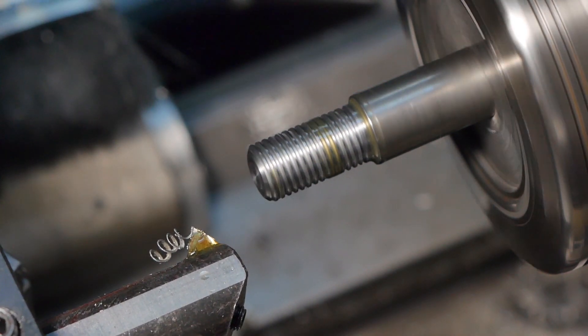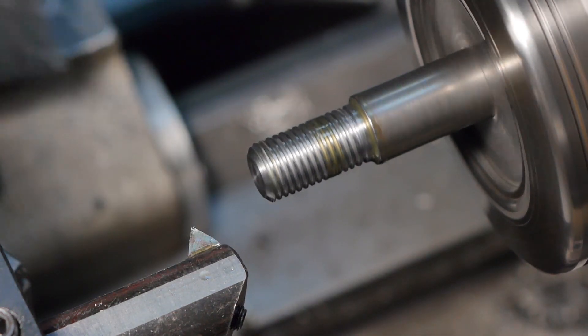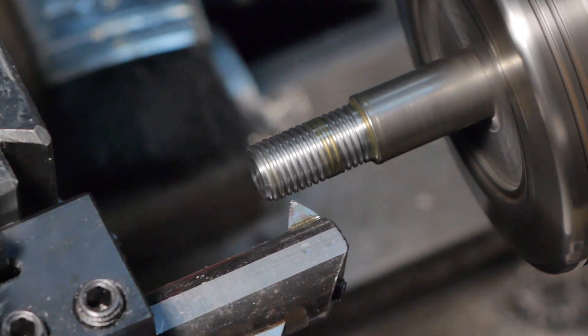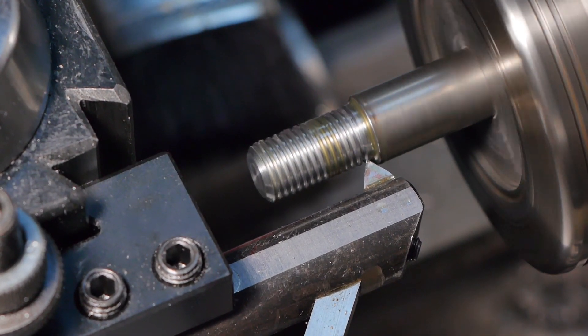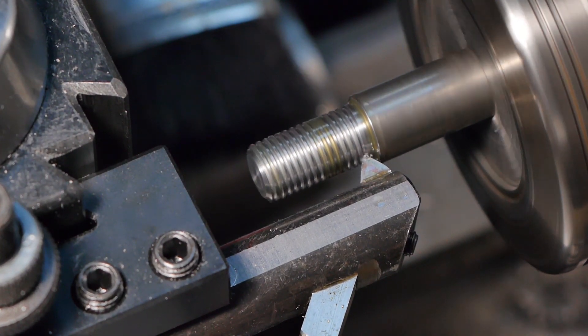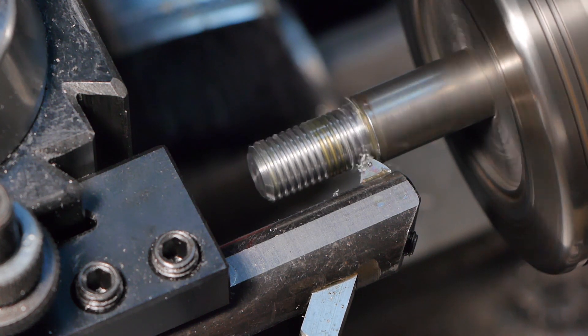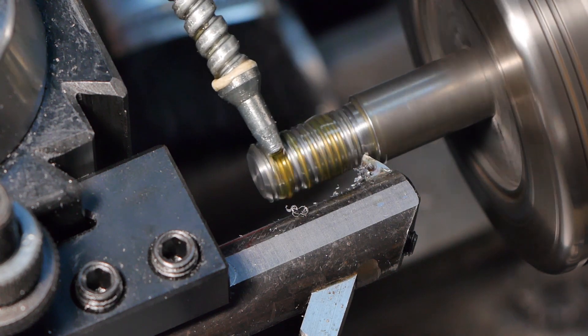Threading proceeds pretty much as usual except that the lathe spindle runs in reverse. So if your lathe has a threaded spindle nose, it will be necessary to have a way of securing your work holding device so that it does not unscrew from the spindle under the force of the cut. If you like to use the compound top slide for threading, it may be set to the usual 29 or 30 degree position.